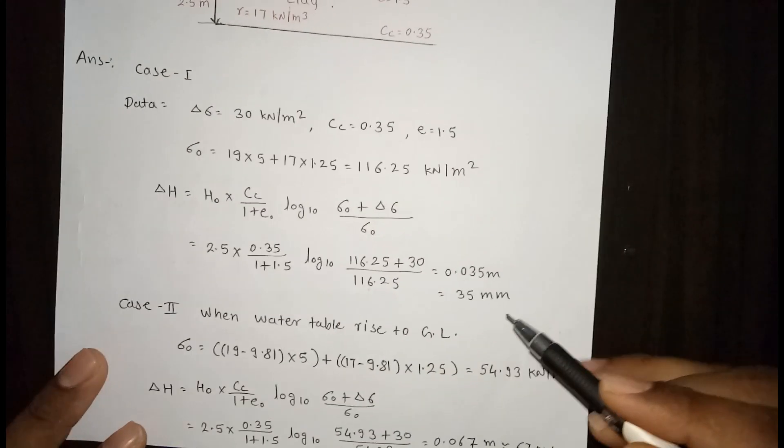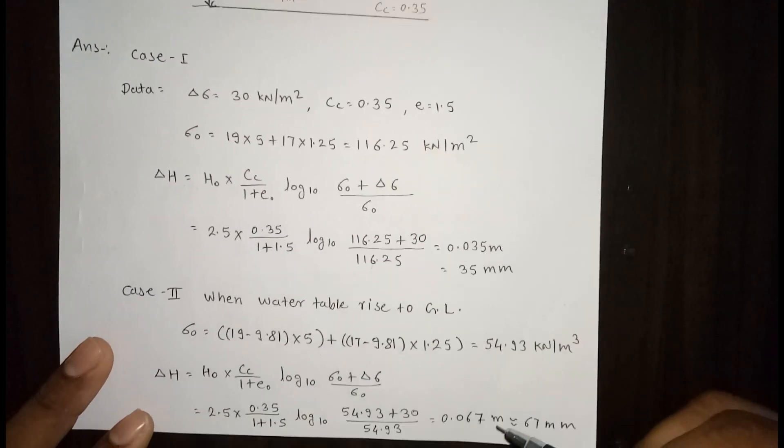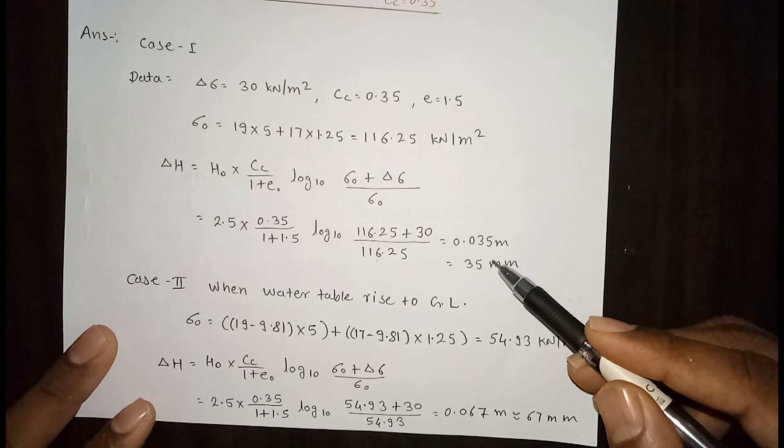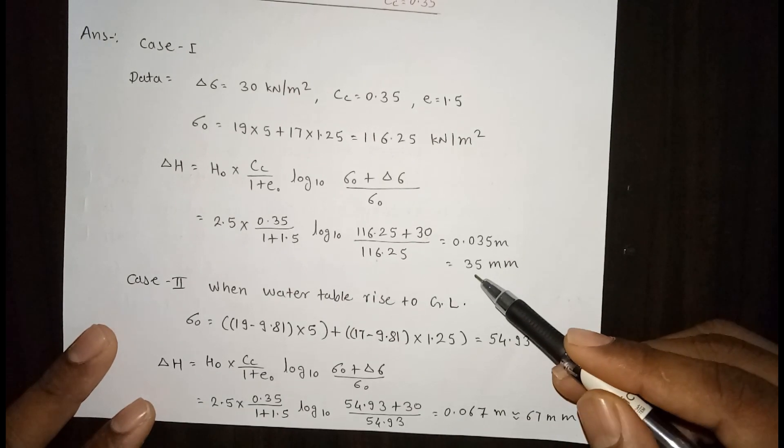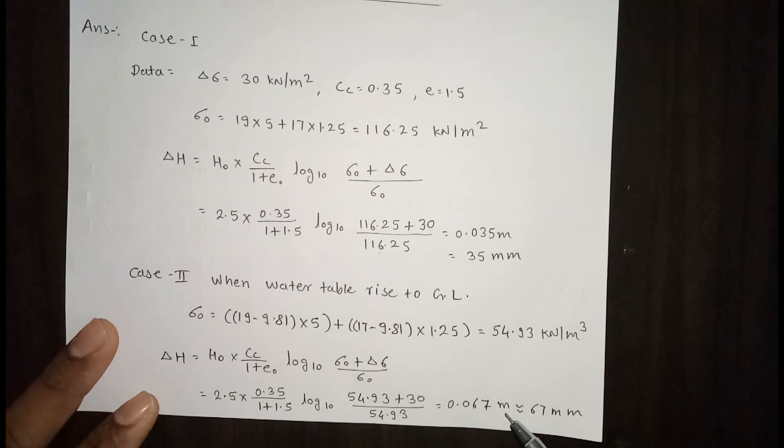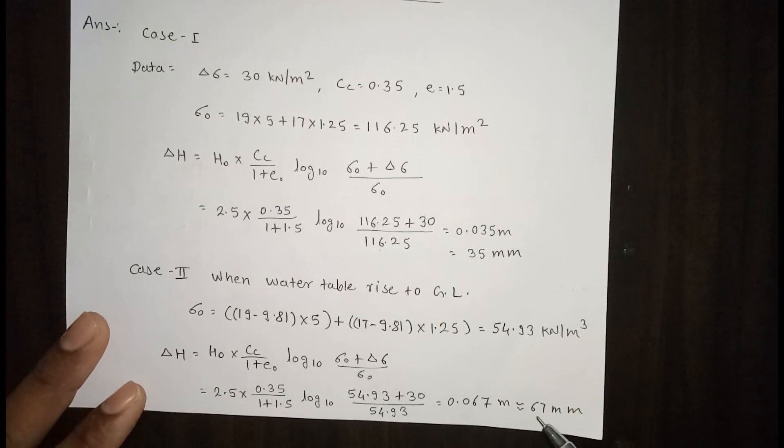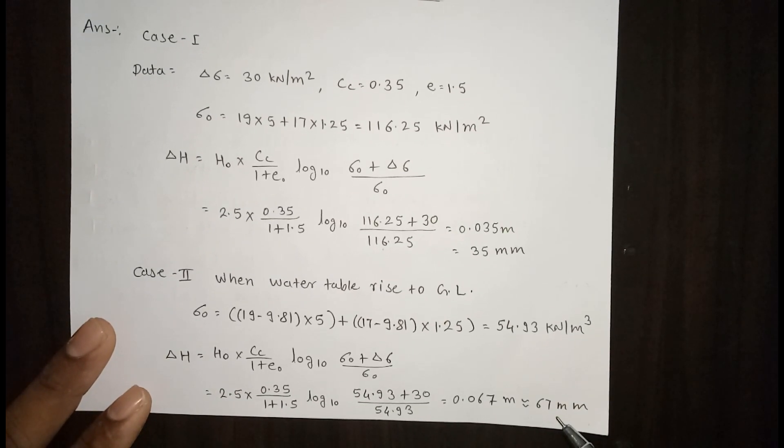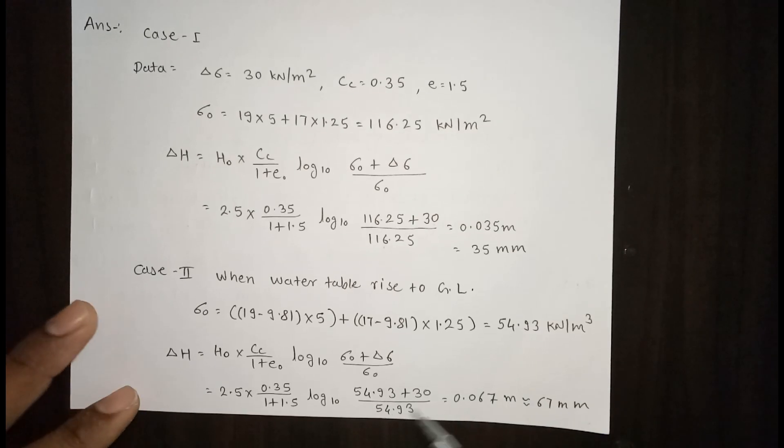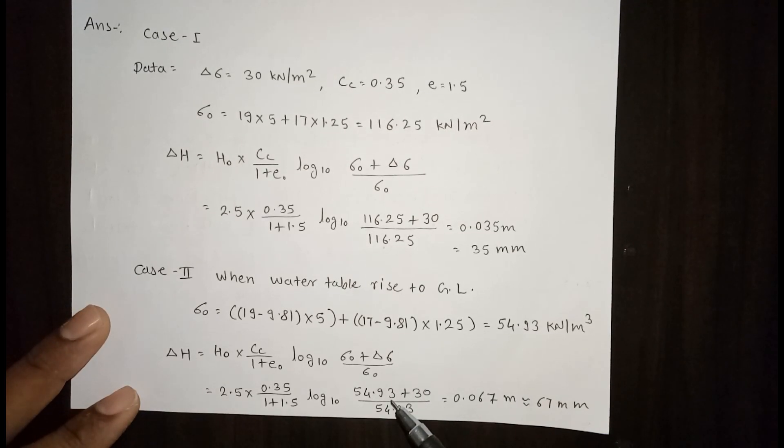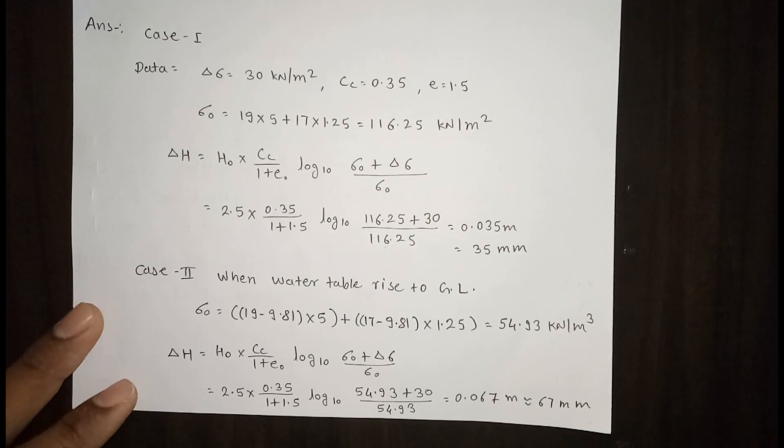Here we can clearly see that if water table increases, the settlement also increases. Here is no water table, so settlement is 35 mm. Now water table is till the ground level, so settlement is 67 mm. We can conclude that if water table is increased to the ground level, settlement also increases. Thank you.